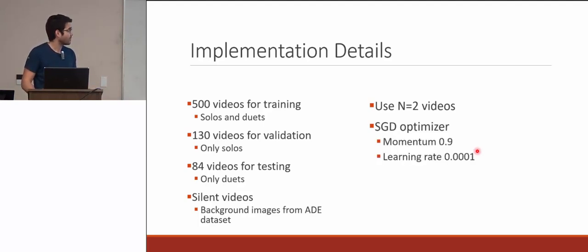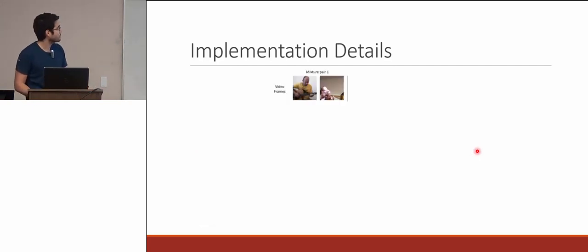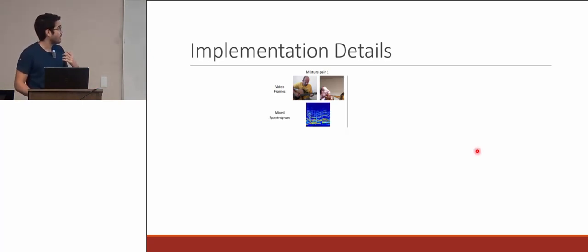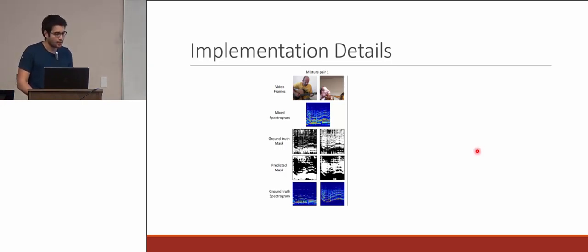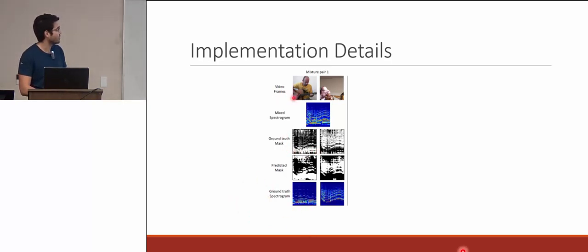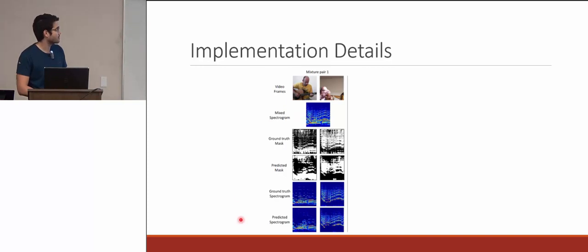Here is an example of two videos being combined — the mixed spectrogram is the representation of both audio sources combined. The ground truth mask correlates exactly to the ground truth spectrogram, where white regions map to actual sounds from the video. The predicted mask is applied on top of the mixed spectrogram to produce the predicted spectrogram, shown alongside the ground truth spectrogram.